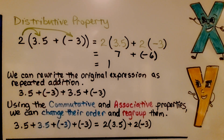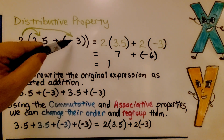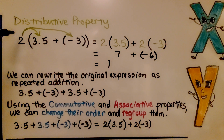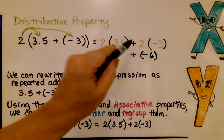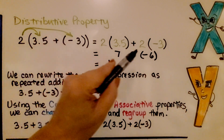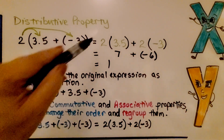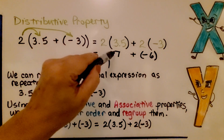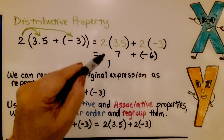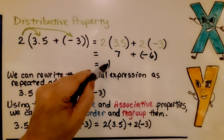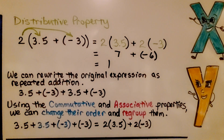Now let me show you something with the distributive property. Here we have 2 times the quantity 3 and 5 tenths plus negative 3. Using the distributive property, we distribute the 2 to 3 and 5 tenths, giving 2 times 3 and 5 tenths, plus we distribute the 2 to negative 3, giving 2 times negative 3. We solve 2 times 3.5, which is 7, and 2 times negative 3, which is negative 6. So now we have 7 plus negative 6, which equals positive 1.